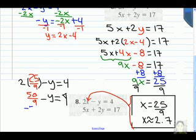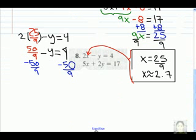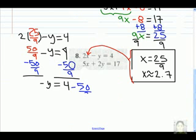Next we can subtract 50 over 9 from both sides. Bring down my negative y to my next step, my equal symbol, my 4, my negative 50 over 9, and we will apply the rules of fractions next.